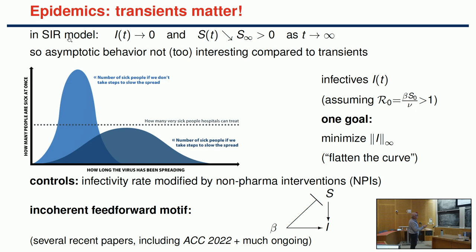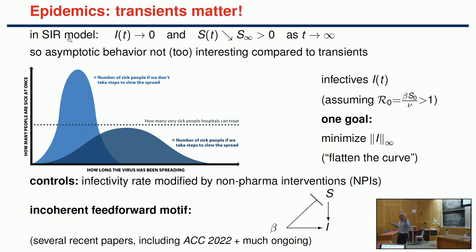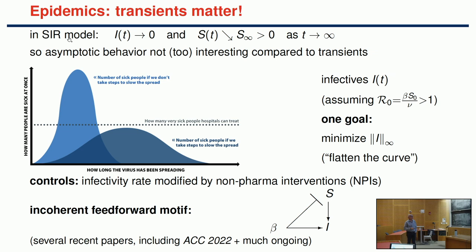What we really care about in that context is not what happens eventually. We care, for example, that the capacity of hospital emergency rooms is not saturated. You really care about something like an infinity norm—that the maximum of I(t), the number of infectives, doesn't go over a certain threshold. People use the phrase 'flattening the curve' in the newspapers.